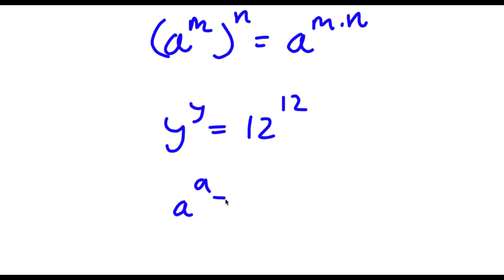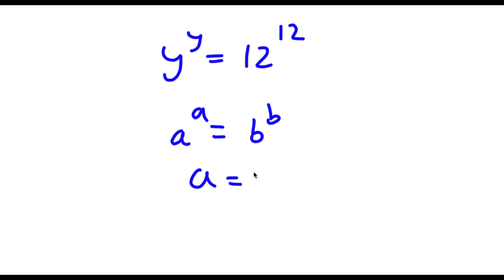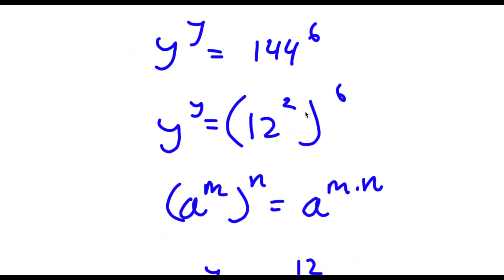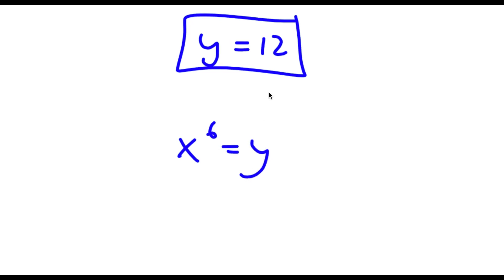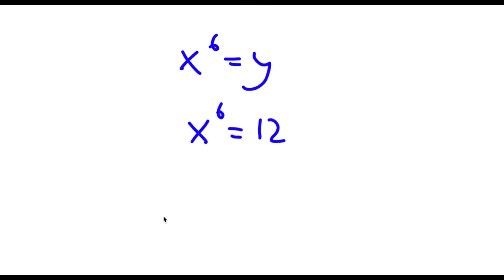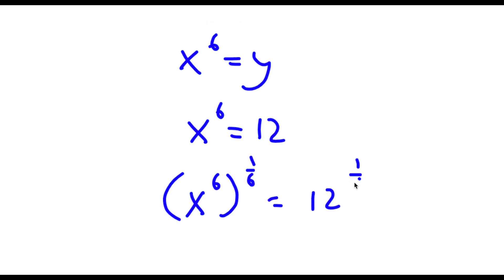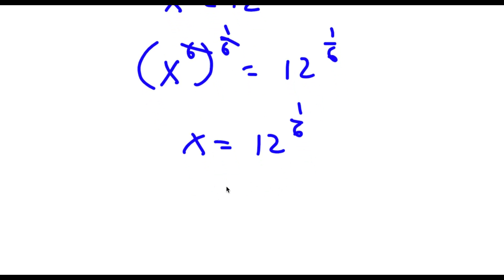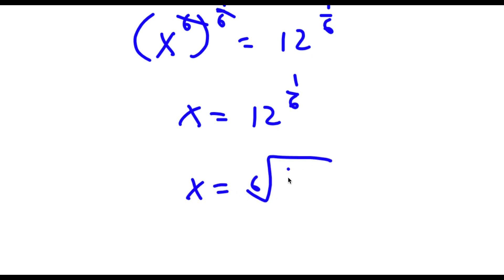Now if a to the power of a equals b to the power of b, this means a equals b. So y equals 12. Remember we set x to the power of 6 equal to y, so x to the power of 6 equals 12. Taking both sides to the power of one-sixth, the 6 and one-sixth cancel out, leaving x equal to 12 to the power of one-sixth, which is the same as the 6th root of 12. So this is my answer.